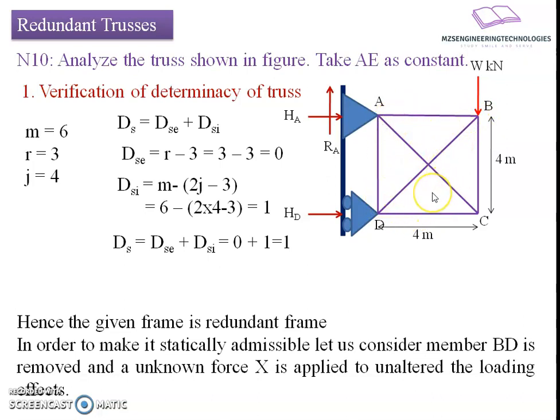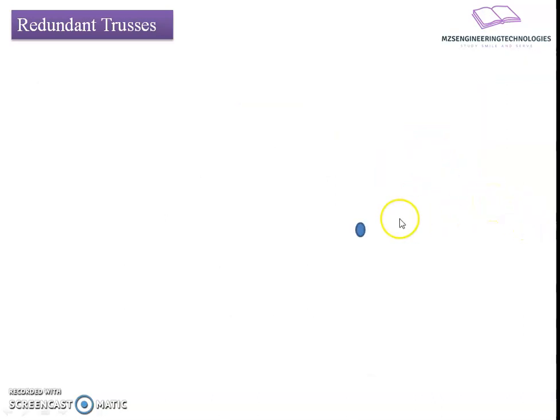Since the structure is statically indeterminate to the first degree, we must make it statically admissible. To do so, we remove one member — let us say member BD has been removed. While doing so, the effect of the other members should be unaltered, so we apply equal and opposite forces at joints B and D along the same line of action, so that the effect of this member force will remain unaltered after removal.